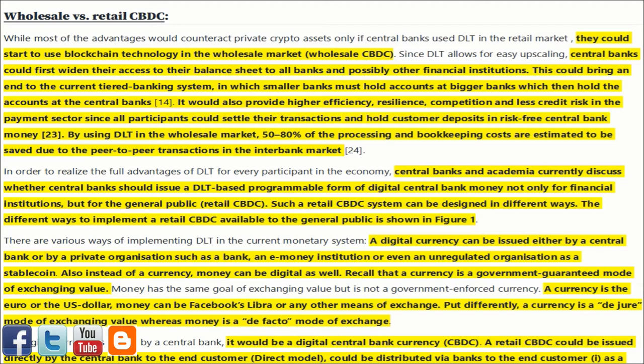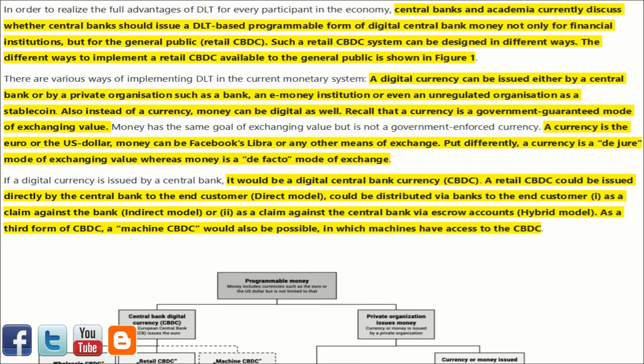Since DLT allows for easy upscaling, central banks could first widen their access to their balance sheet to all banks and possibly other financial institutions. This could bring an end to the current tiered banking system, in which smaller banks must hold accounts at bigger banks which then hold accounts at the central banks. It would also provide higher efficiency, resilience, and competition, with less credit risk in the payment sector — since all participants could settle their transactions and hold customer deposits in risk-free central bank money. By using DLT in the wholesale market, 50 to 80% of processing and bookkeeping costs are estimated to be saved due to peer-to-peer transactions in the interbank market.